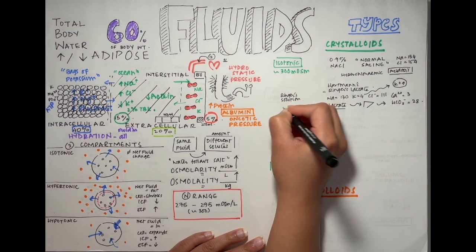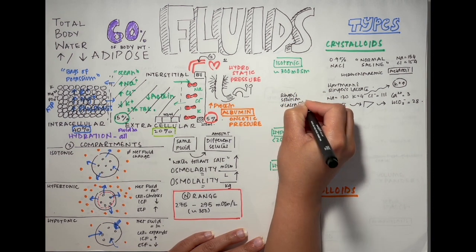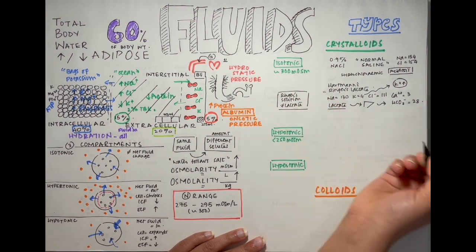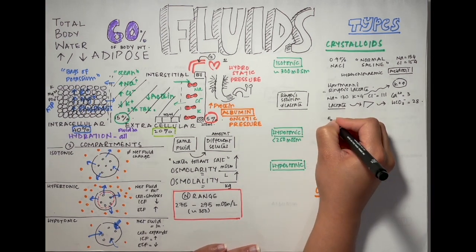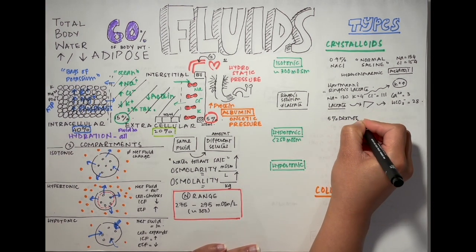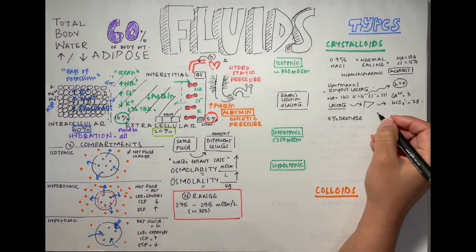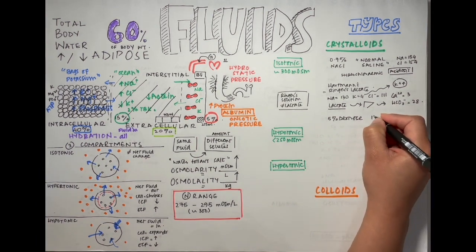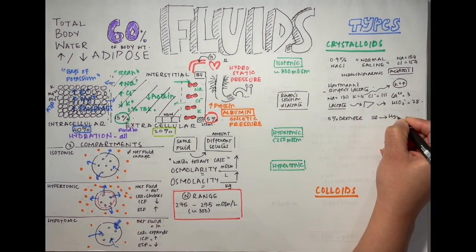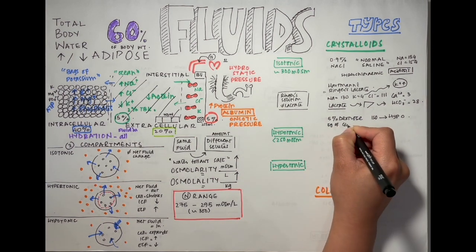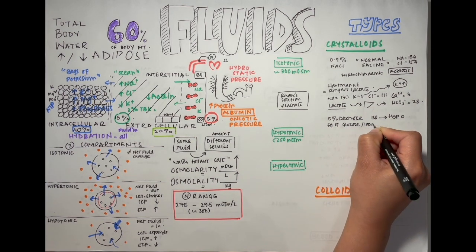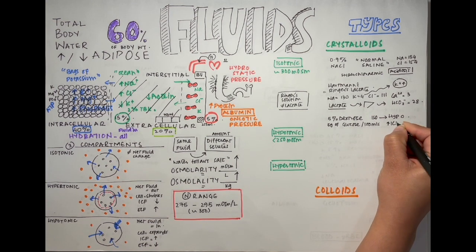There is a small chance of hyperkalemia with Ringer's lactate but you'd have to give 10 liters of it to actually cause a cardiac arrhythmia. There's Ringer's solution which is very similar to Ringer's lactate but without the actual lactate. We have 5% dextrose which is basically free water with a little bit of glucose in it. It's an isotonic solution which is metabolized into a hypotonic solution.